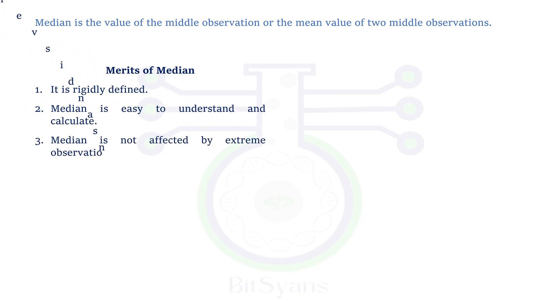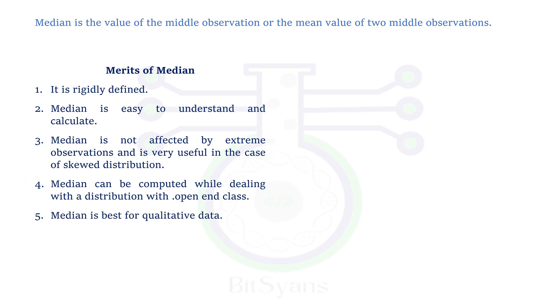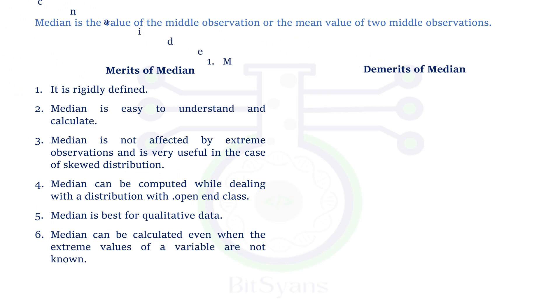It's rigidly defined. It is easy to understand and calculate. It is not affected by extreme observations as we have seen in mean. Median can be computed while dealing with a distribution with open end class. It is also best for qualitative data. It can be calculated even when the extreme values of a variable are not known.